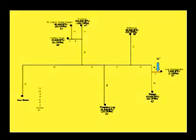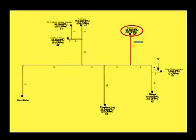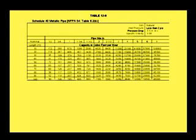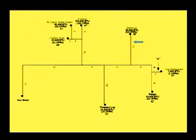The 12-foot section for the barbecue is next and has a demand of 50 cubic feet per hour and is 58 feet from the meter. Refer to table 12-8, 60-foot row — 50 will fit under 65 — and see that a 1/2-inch pipe will accommodate the 50 cubic feet per hour demand for the barbecue.